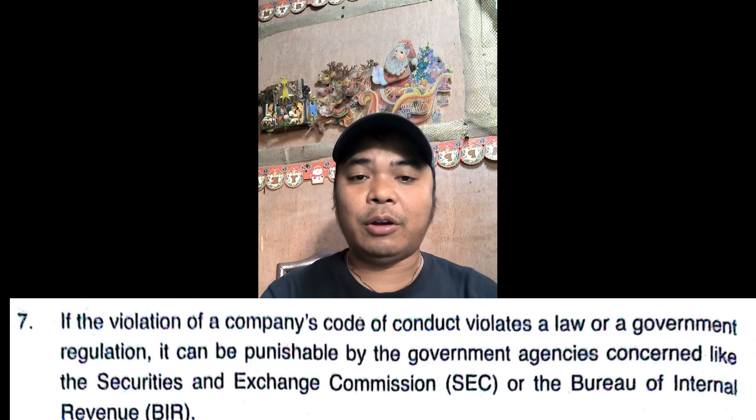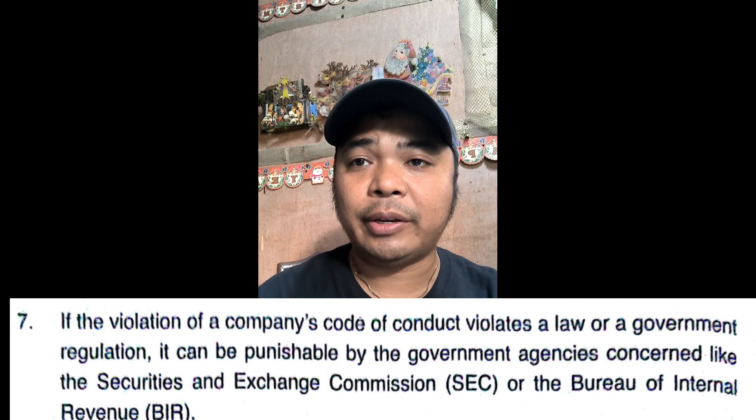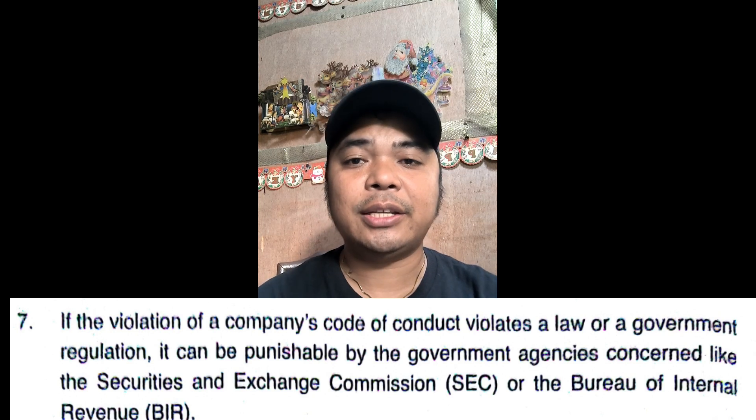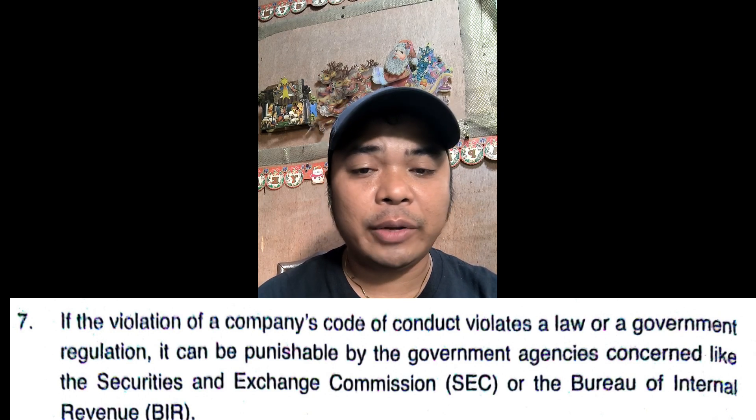If the violation of a company's code of conduct also violates a law or government regulation, it can be punishable by government agencies such as the Securities and Exchange Commission or the Bureau of Internal Revenue. Legal consequences of violations are serious — when a code of conduct violation also breaches laws, the company or individual can face legal action, including having licenses revoked or other actions initiated by government agencies against the offending company or individual.